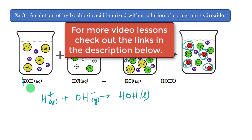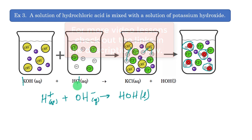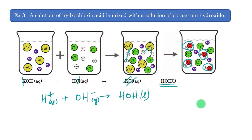The spectator ions in the acid-base reaction are potassium and chloride — they drop out, and we focus on just the formation of liquid water. All right, that's net ionic equations. Thanks for watching, and I will talk to you guys soon.